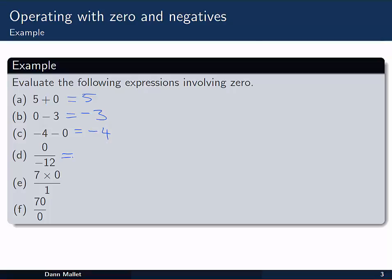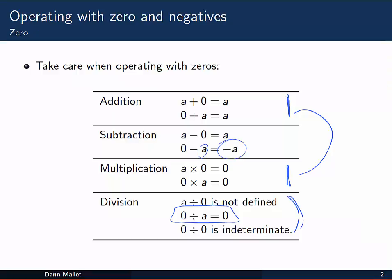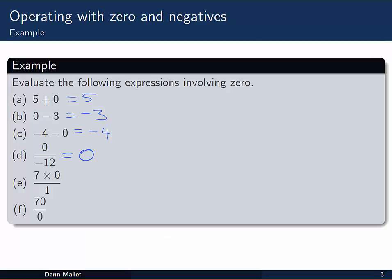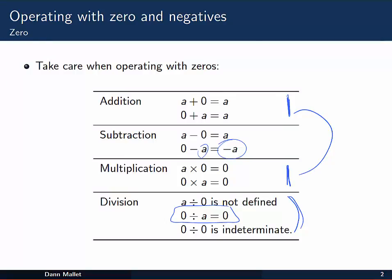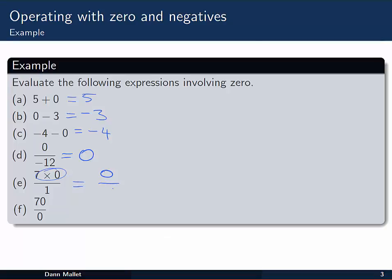Zero divided by minus twelve. Let's remember zero divided by a number that's not zero. That's easy. That's zero. So we can pop that one straight in. Seven times zero and one. We've got to do something with that first. Seven times zero. My rules up here say that's going to be zero. So that's zero over one. Zero divided by a number that's not zero. That's zero as well.